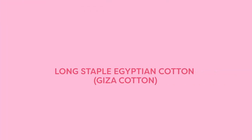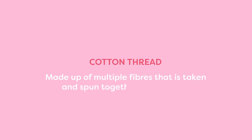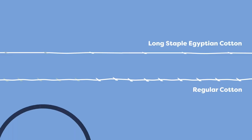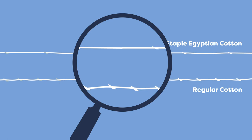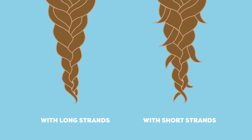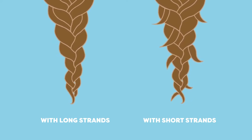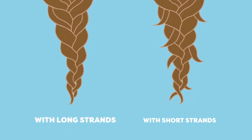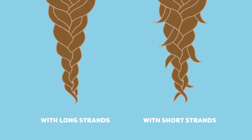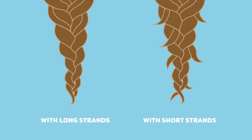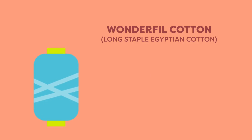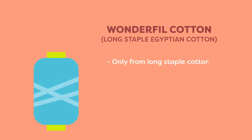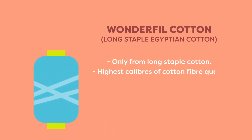Long staple Egyptian cotton, or Giza cotton. Cotton is made up of multiple fibers that are spun together into strands to make thread. The best quality fibers are the longest fibers, as these will create a significantly less linty thread. You can see this for yourself by taking longer strands of hair and twisting them, then doing the same with shorter strands. The longer hair has fewer ends poking out than the shorter strands. This is what the term long staple Egyptian cotton is referring to. Wonderfill manufactures all of its cotton thread only from long staple cotton, one of the highest calibers of cotton fiber quality.